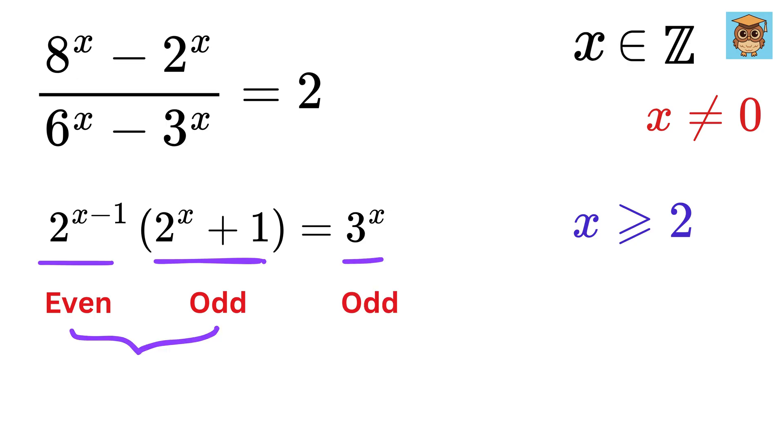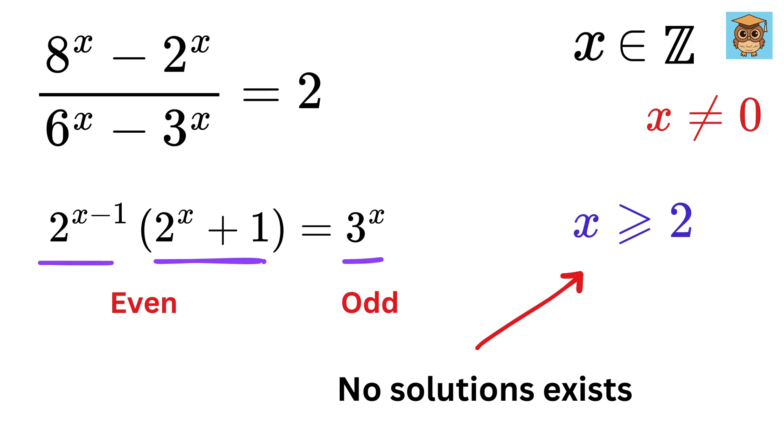Also, even times odd is even always. But it can't be true. Even cannot be equal to odd. Hence, no solution exists if x is greater than or equal to 2.